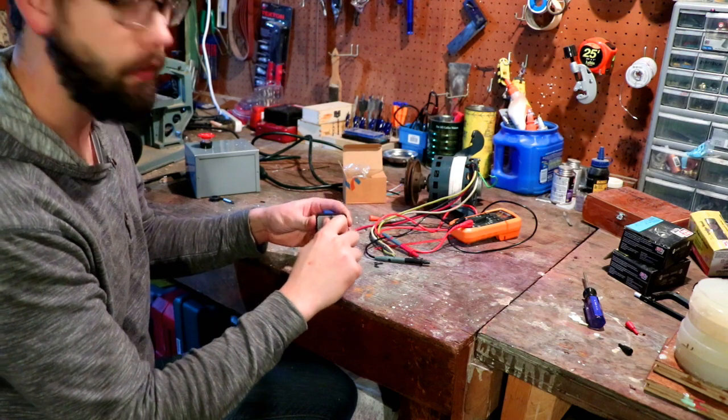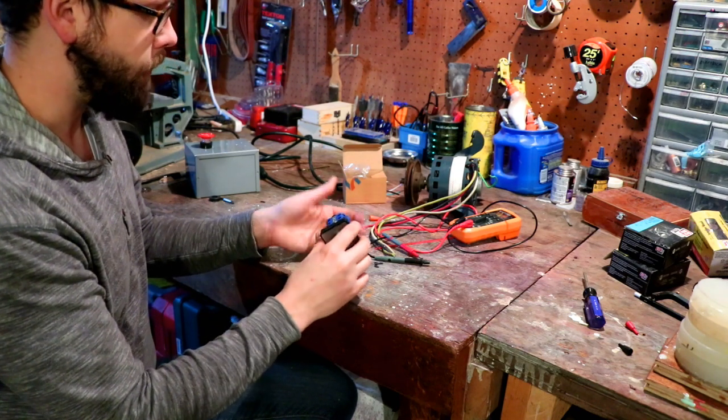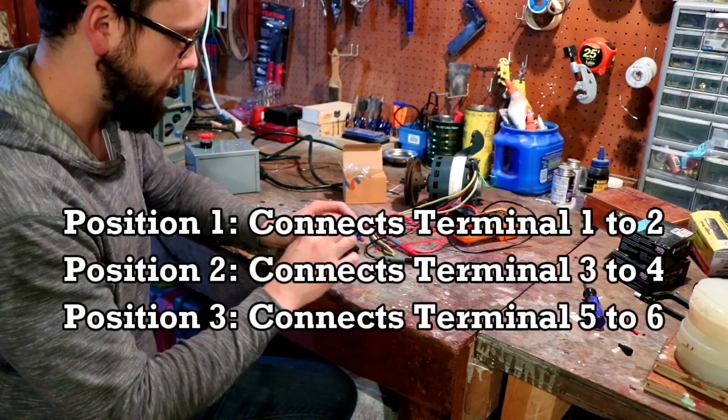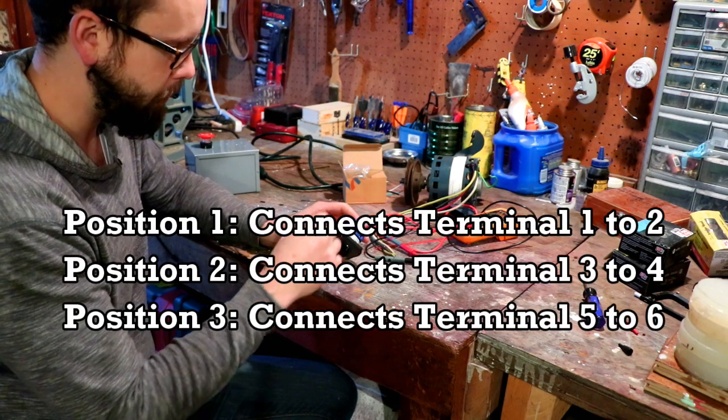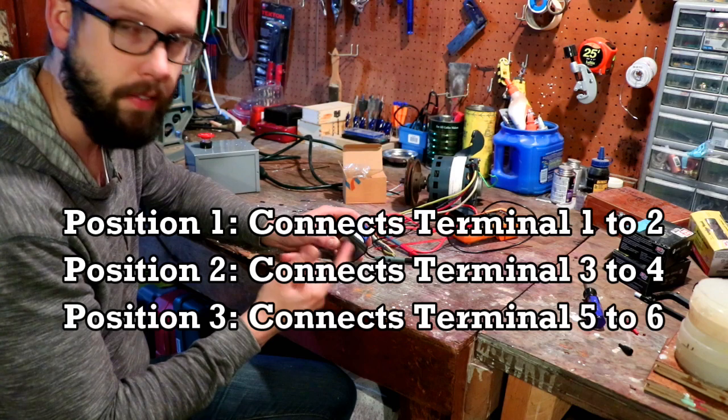So the way this exact switch works is it has four positions. So off, one, two, and three. And in the off position nothing is connected. In the first position pin one and two is connected. Second position pin three and four. And third position pin five and six.